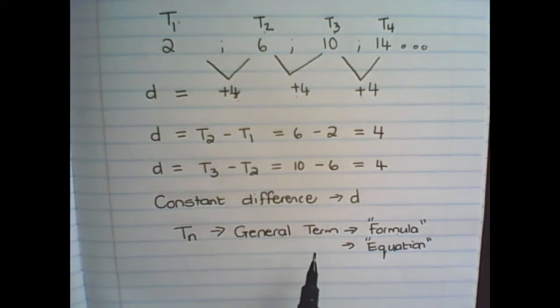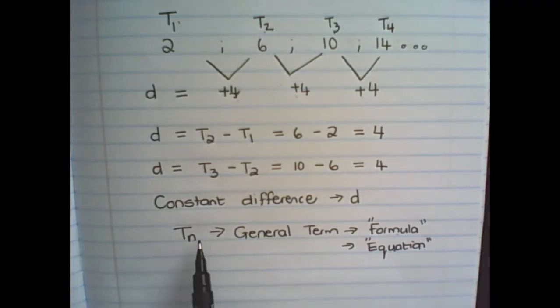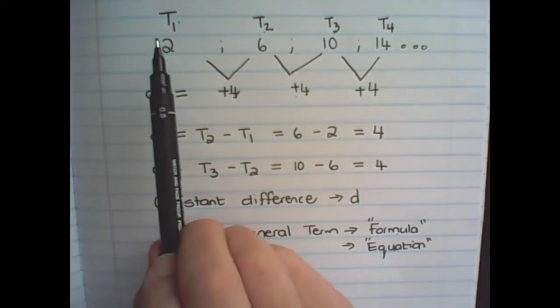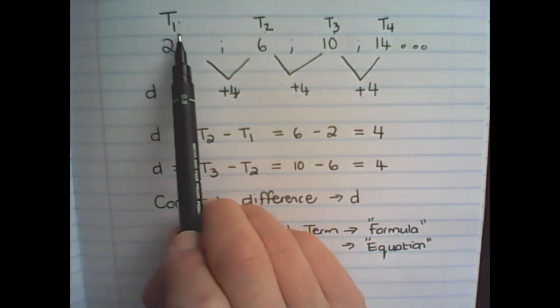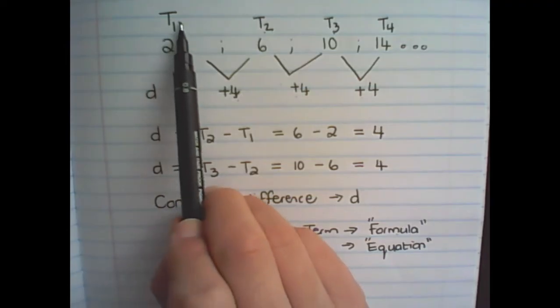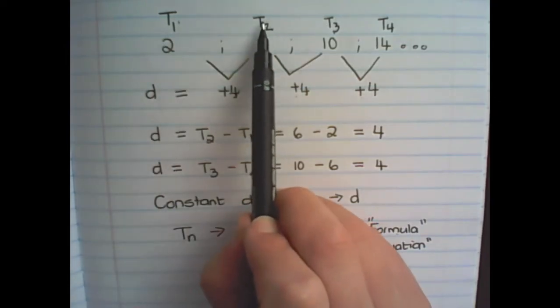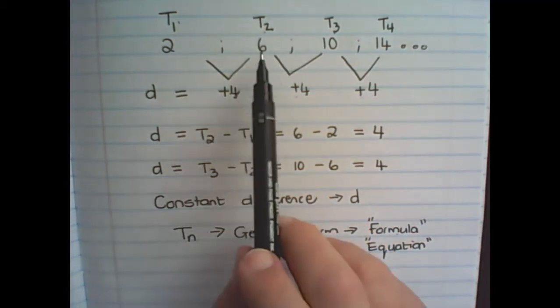What it simply means is a rule that describes any term in the Pattern, where n is always a natural number. Because we start with term 1, so in the first term the value of n is 1, and the second term the value of n is 2, and so on.